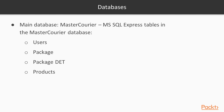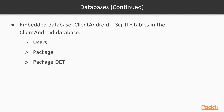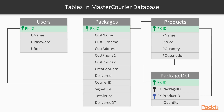In the MasterCurier database we will have the following tables: users, package, package details, and product. In the Embedded database Client Android we will have the following tables: user, package, and package details.